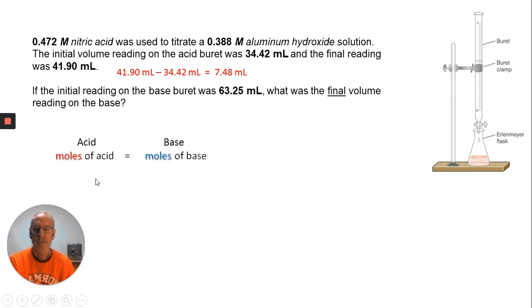The first step we need to do is figure out how much acid we added. The acid went from 34.42 down to 41.9, so we added 7.48 mL of acid. As we stated in the earlier example, the moles of acid or the amount of acid has to equal the moles of base. We're going to use MV number equals MV number. Let's look at what we're dealing with. We have nitric acid, HNO3, a monoprotic acid, so it produces one proton.